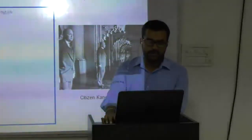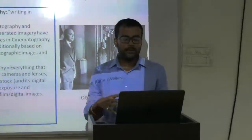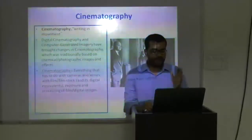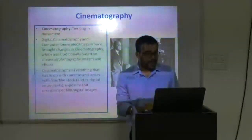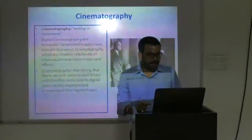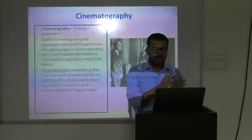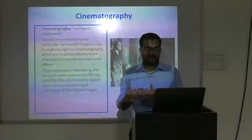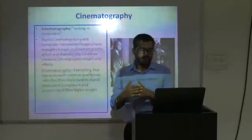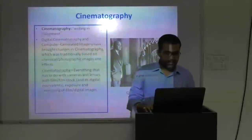So I'll start with the definition first. Cinematography is something that's related to motion pictures, where we record a number of pictures which are moving in seconds, so we have different frame rates to record the same thing. In digital cinematography and computer generated imagery, we have broad changes in cinematography, which has traditionally been based on chemical photographic images and effects. Like previously we had stocks, we had films, but now these days we have digital stuff, so we record anything through digital medium, which can be a video camera, a DSLR camera, or a phone — any medium that can record video.